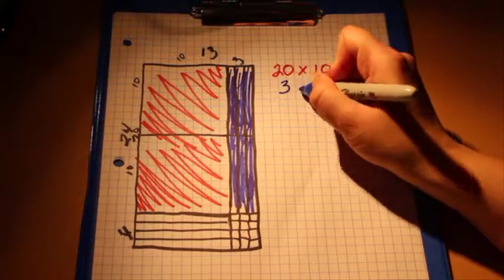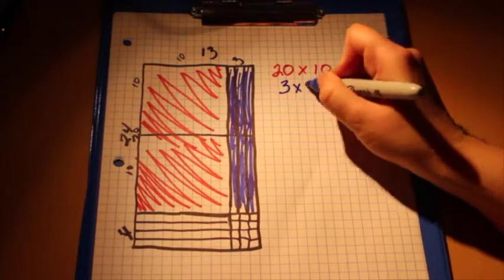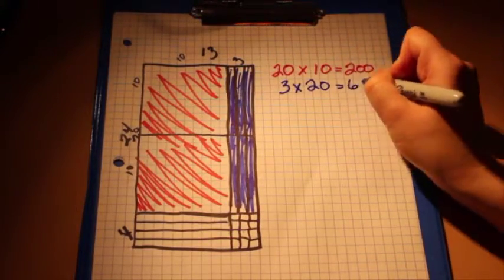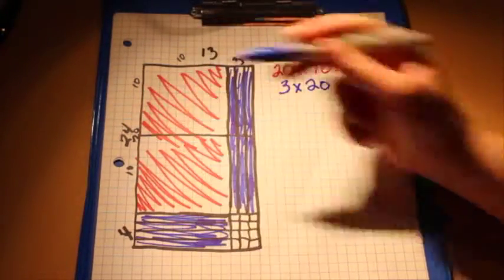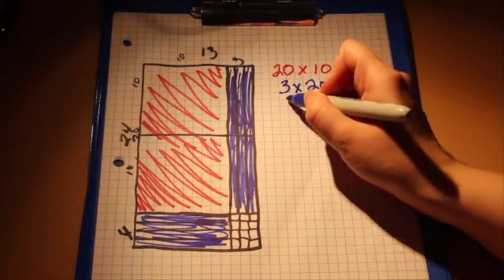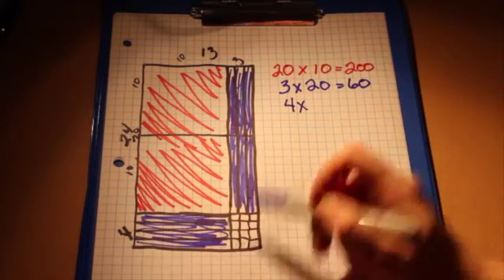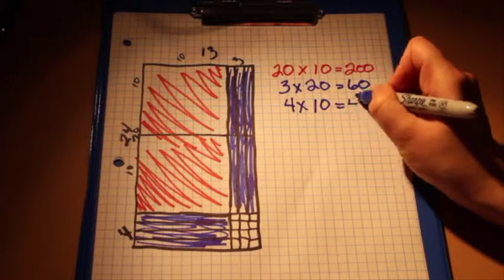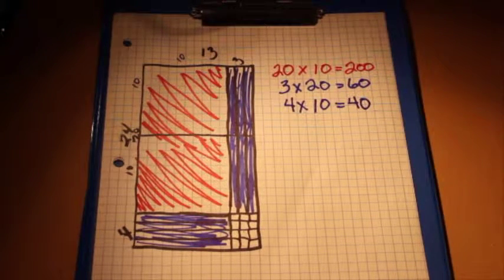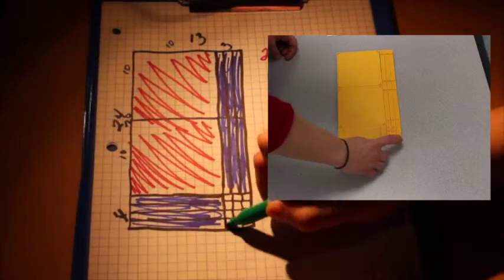And you have 3 times 20 which equals 60. And 4 times 10 which equals 40. And these are our ones.